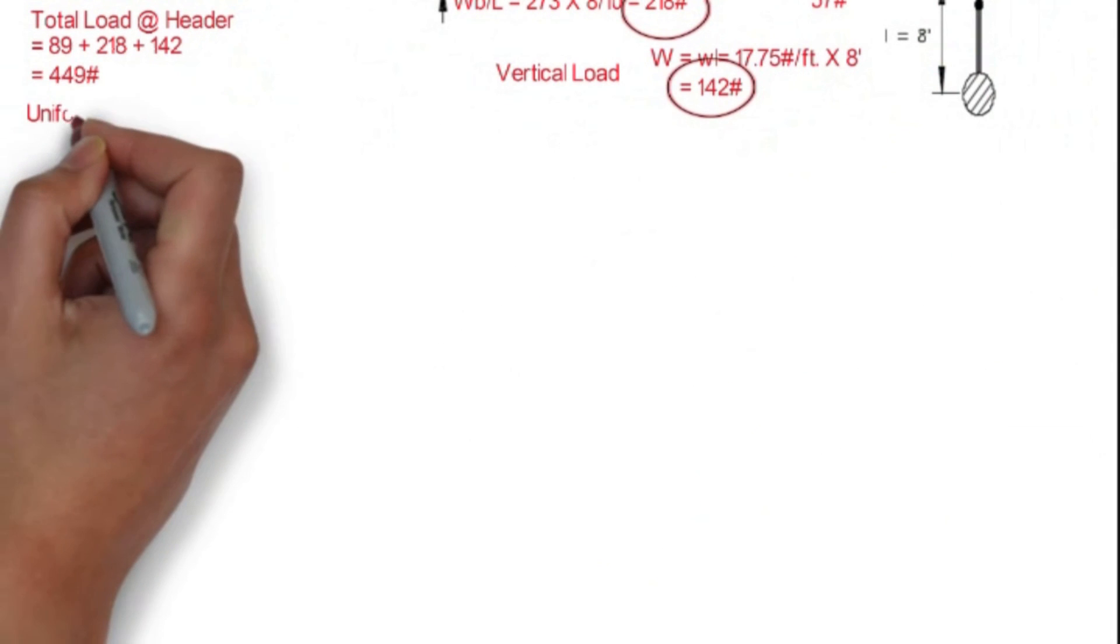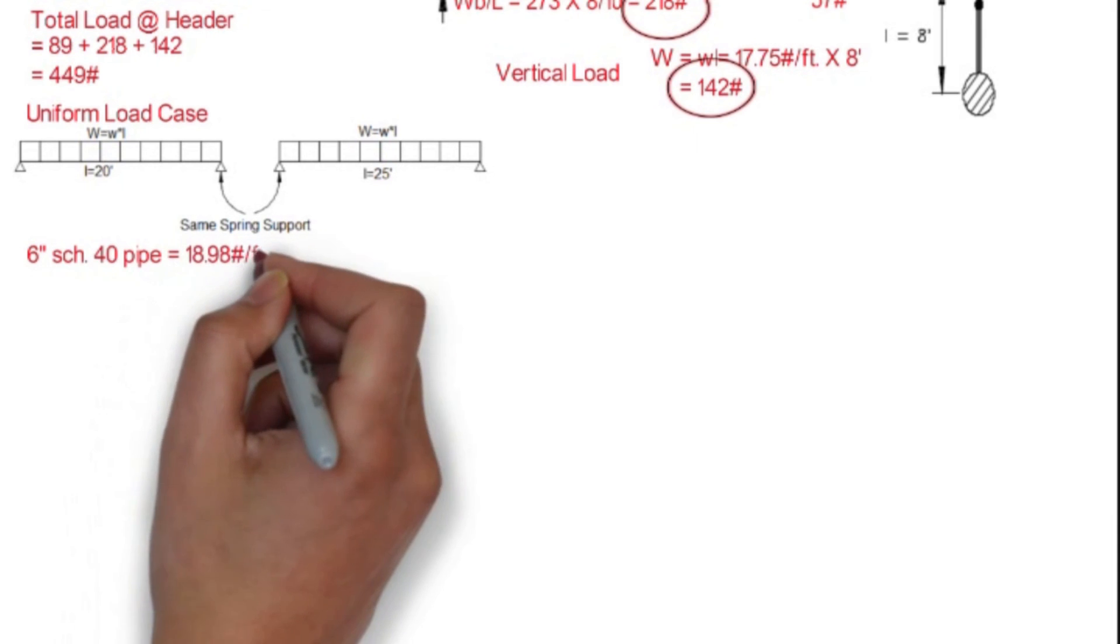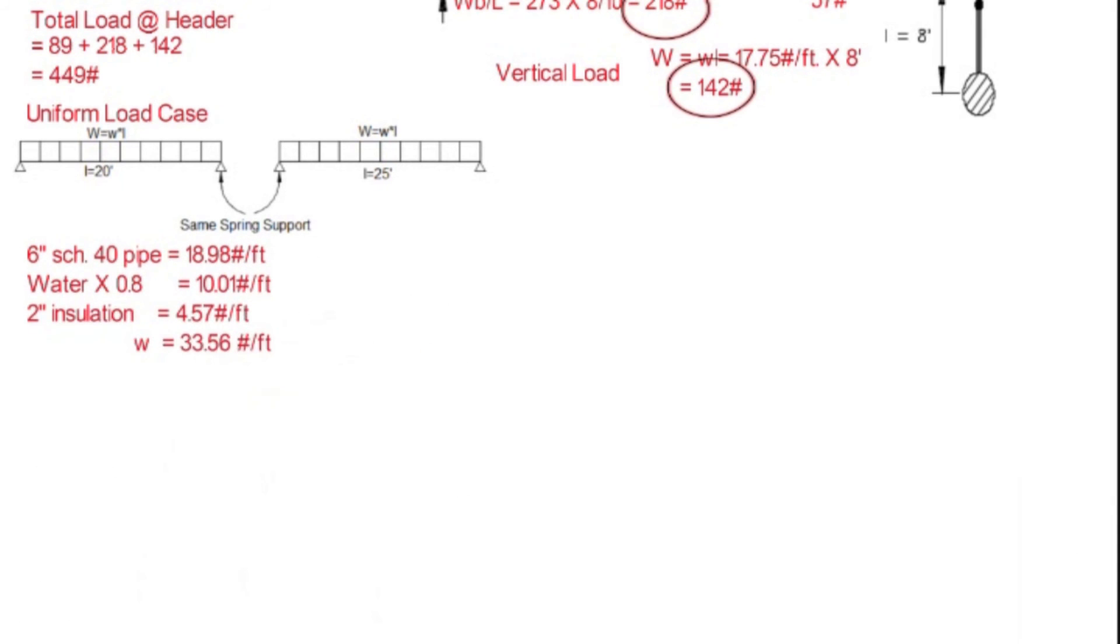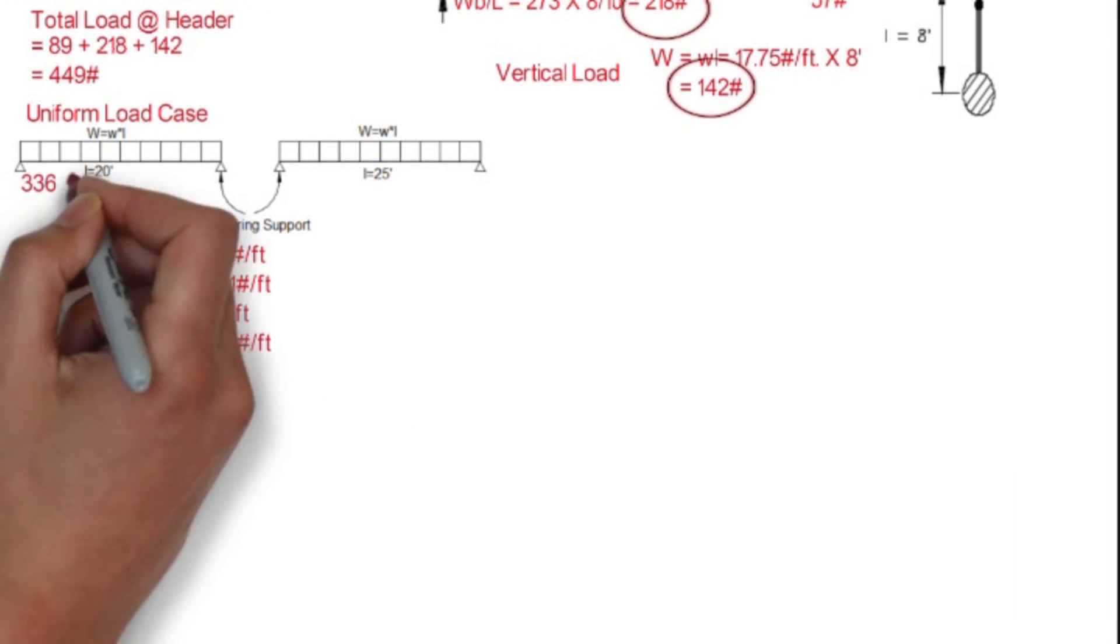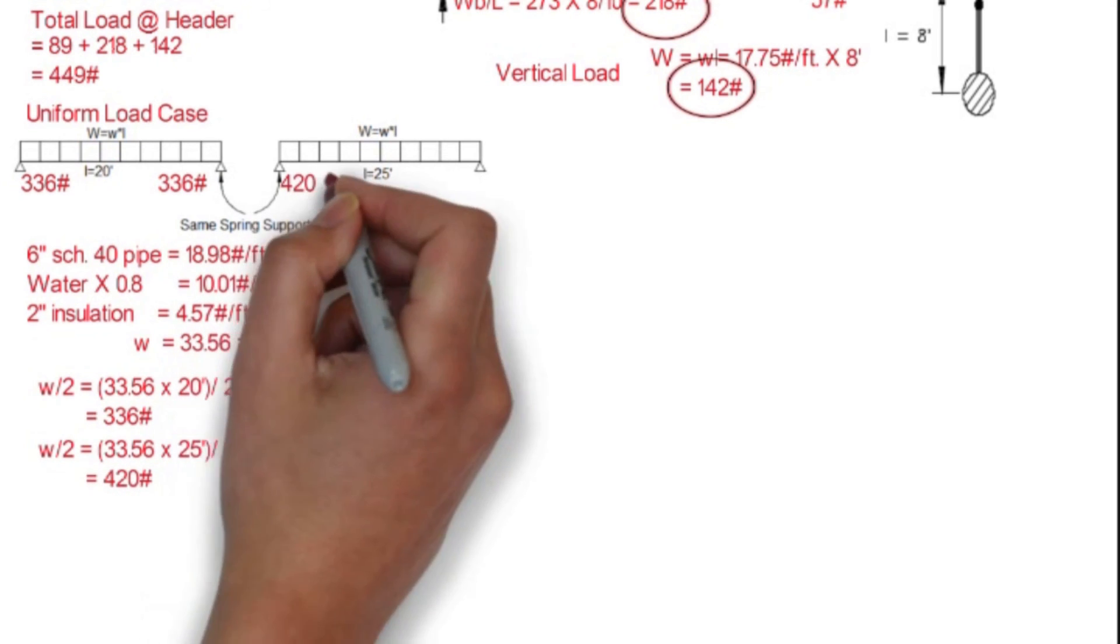Now we can move to the header. Here we have two sections, one of 20 feet and another one is of 25 feet. We can see the load at the spring support. Similarly, as we have done for the branch, we will calculate the load in the header. We can see the load on the spring supports are 336 pounds.